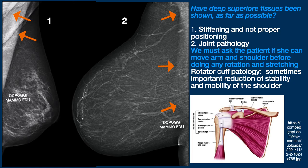In the first image, the patient has definitely stiffened — you see the fold in the deep superior tissues — but we have to say the positioning technique was not properly performed. Rotations are missing, the arm is not relaxed.